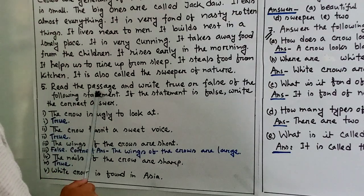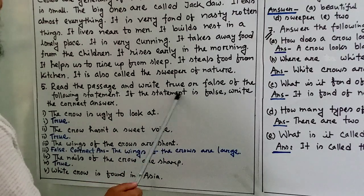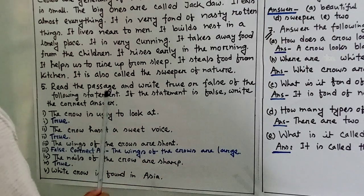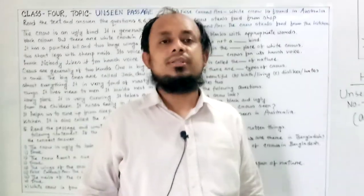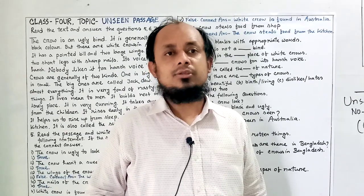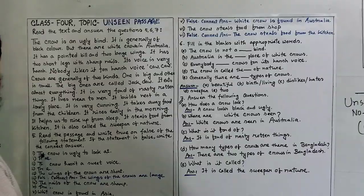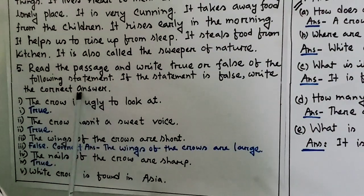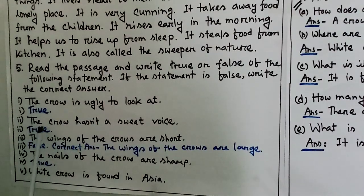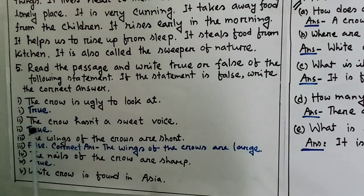Read the passage and write true or false for the following statements. If the statement is false, write the correct answer. Statement 1: The crow is ugly to look at — this is true. Statement 2: The crow does not have a sweet voice — this is true.